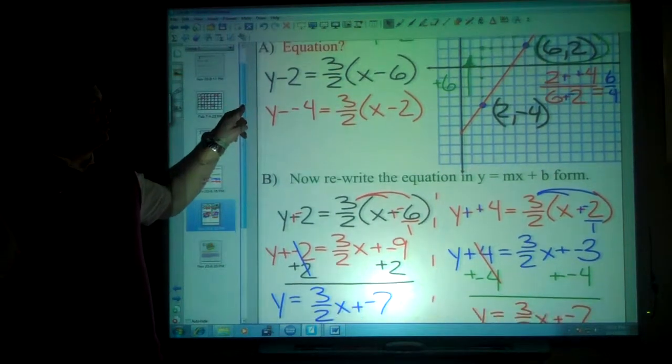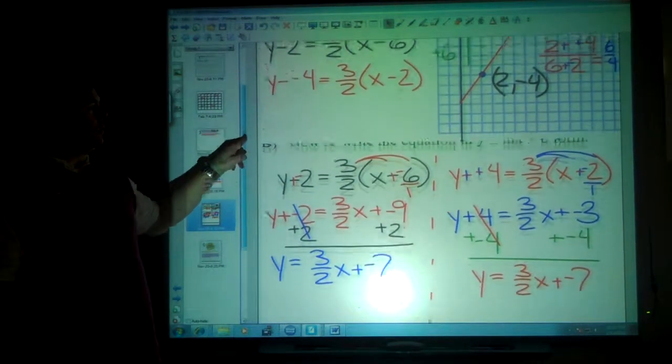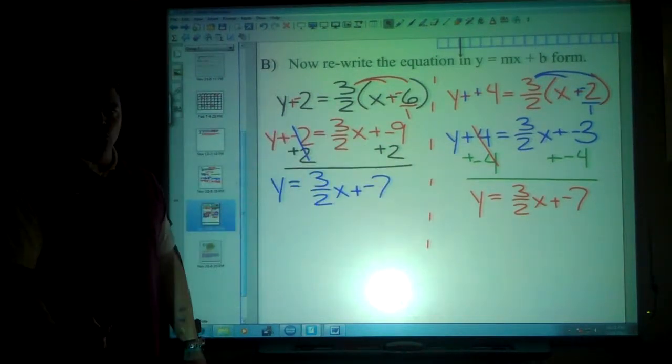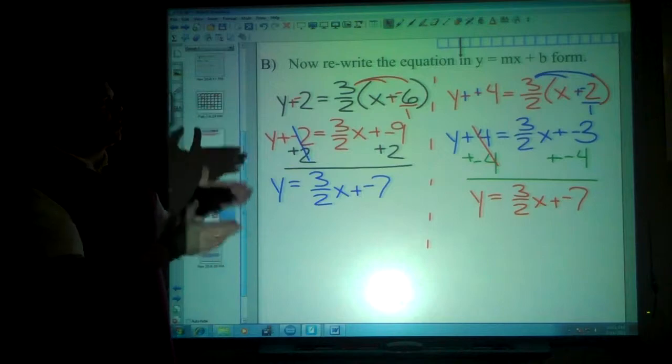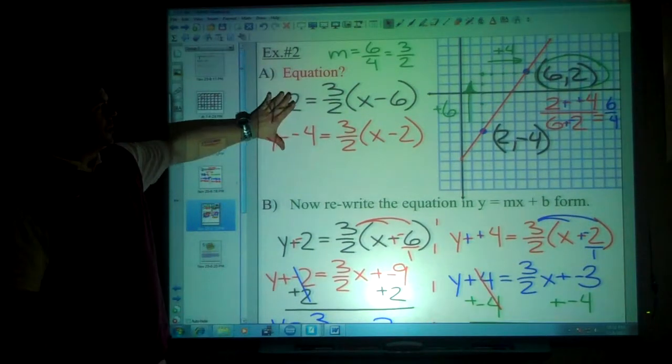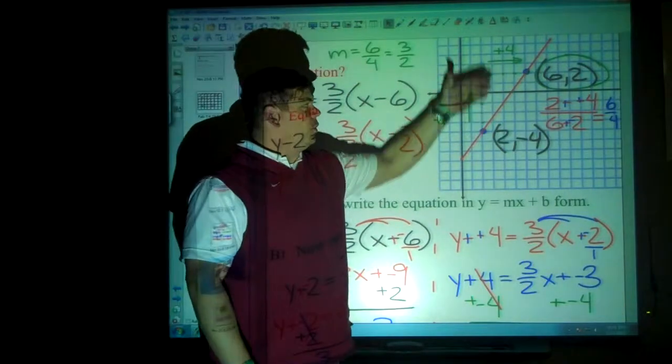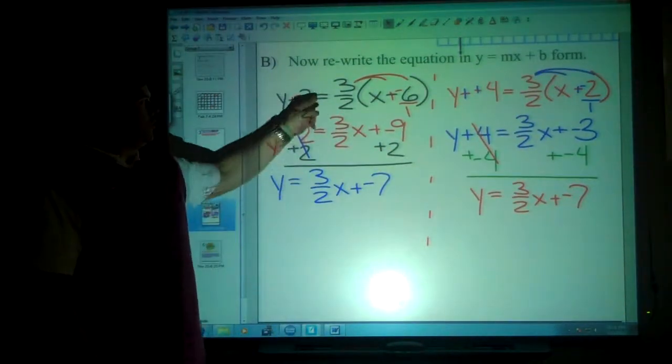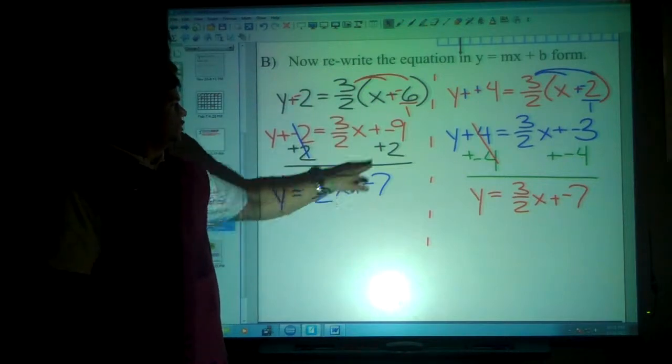If you use the distributive property and shuffle to get y alone, it should produce the exact same equation. You will not have to do both. You just simply pick one or the other. So, I made it up here, I did both, because it depended on which equation. If you only choose one, you only have one answer. And then down here, you could convert it with the distributive property and one shuffle. It's really just two steps to go from point slope to slope intercept form.